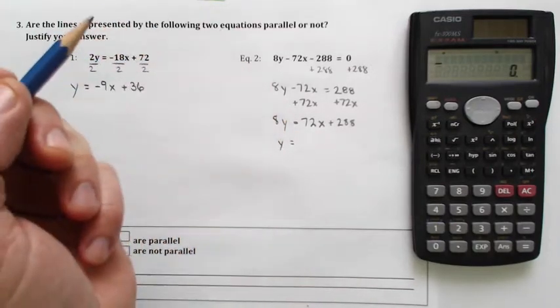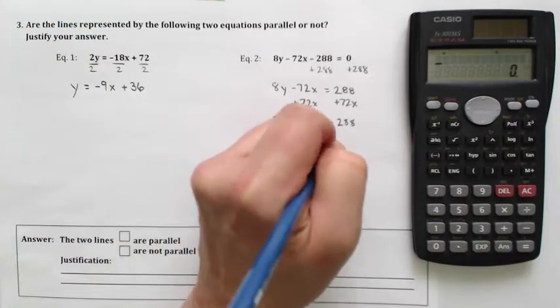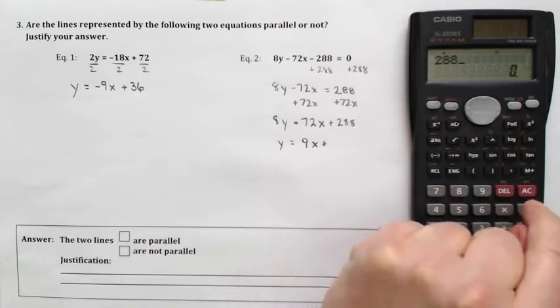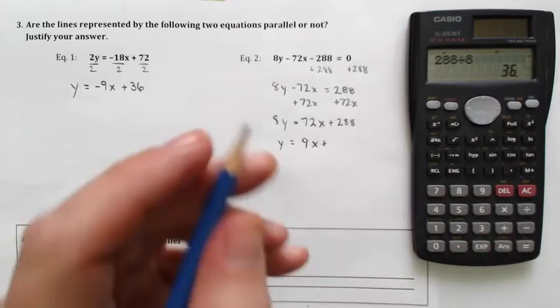And when I do that, you're going to see that I get 9x plus, better check this one, 288 divided by 8, I think gives me 36 as well.